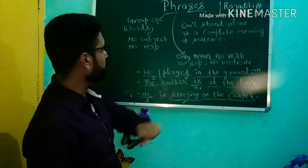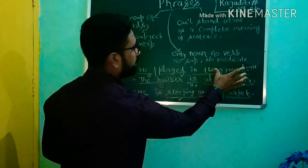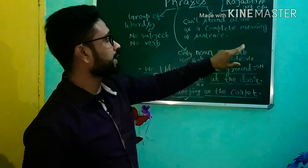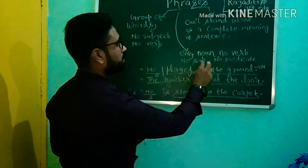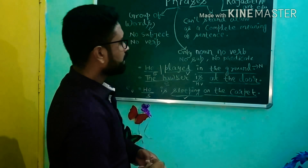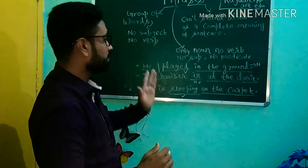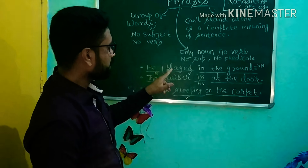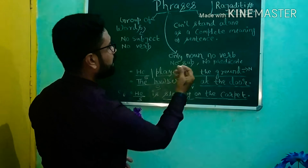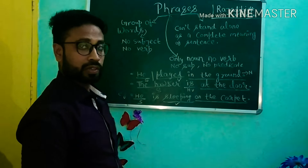No subject and no verb, and it can't stand alone as a complete meaning of a sentence. Whether it is 'in the ground,' 'at the door,' or 'on the carpet' — none of these can stand alone as a complete sentence. There is only a noun present, no verb, no subject, and no predicate. This is what phrases are all about.